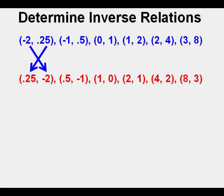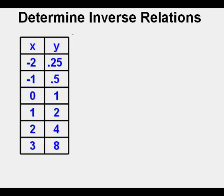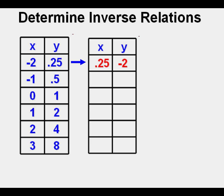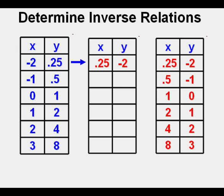Now we'll do the same thing, but from coordinates in a table. Here's a table of data, the same data we looked at earlier but in table form. Here's that first coordinate pair with the x and y coordinates switched. And here's the table on the right with all points in the original table switched. So that's how we can do it from rewriting ordered pairs, from the ordered pairs themselves, or from a table.